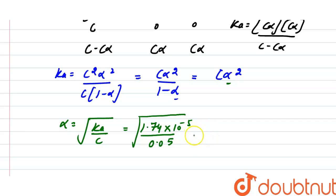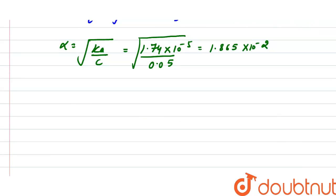In the reaction, concentration of H+ ions equals Cα. The concentration is 0.05 and α is 1.865 × 10^-2, so the H+ ion concentration is 9.33 × 10^-4.